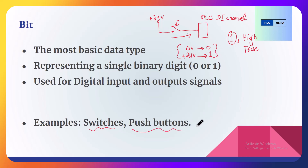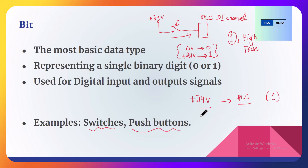We also have push buttons and other digital sensors, for example a proximity sensor. If it is sensing any metal, it will send plus 24 volts to the PLC, and the PLC will treat this 24 volts as one in programming. If no voltage is sent to the PLC, it will treat this signal as zero. So zero and one — this is the boolean, a single binary digit, and it is the simplest data type used in PLC programming.